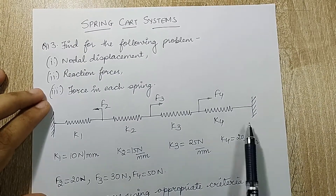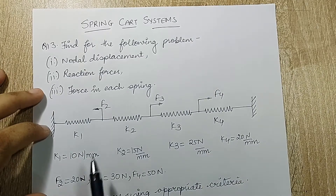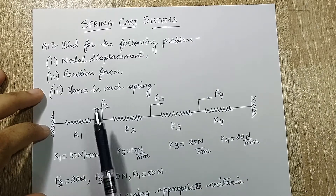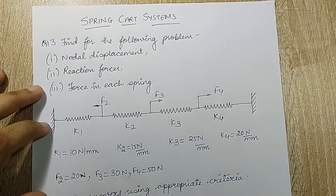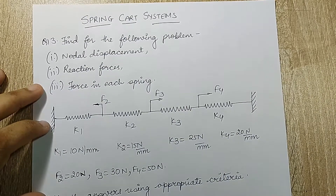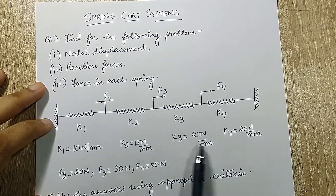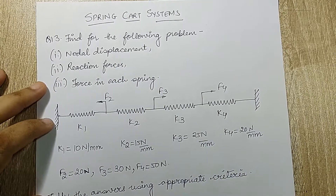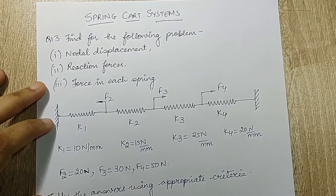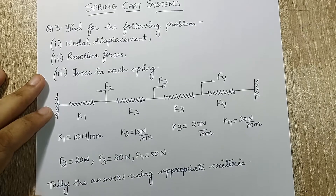U1 and U5 will be zero because these two nodes are fixed. I also need to calculate the force in each spring. The values of stiffness are given to me for each spring, and I have to tally the answers using the appropriate criteria.